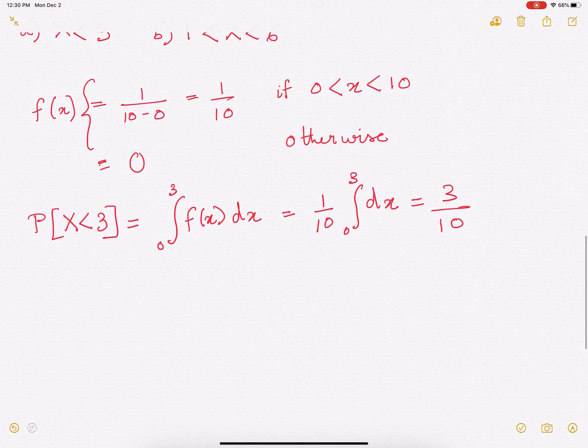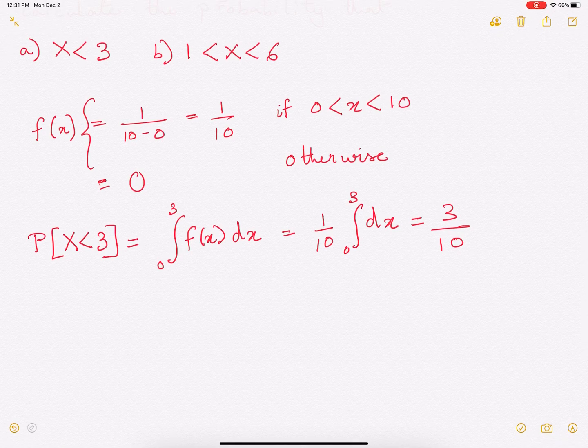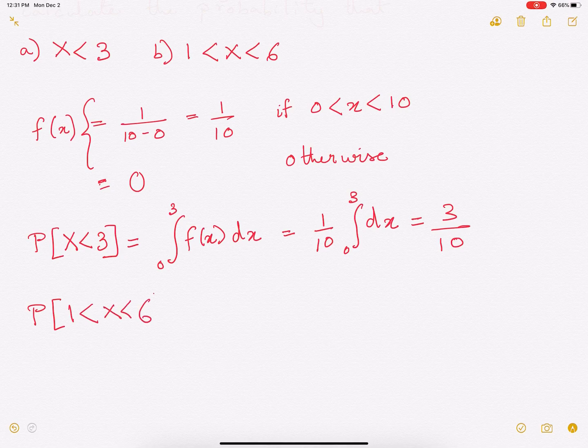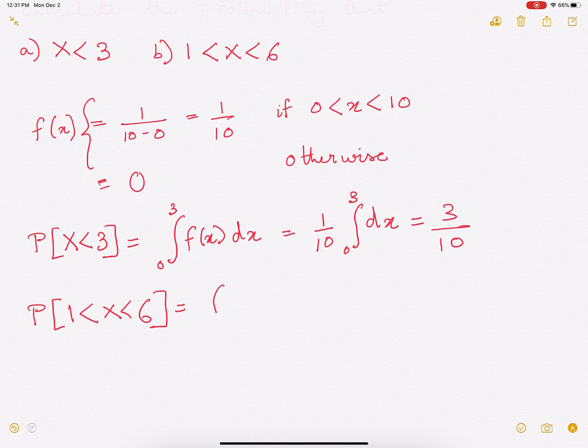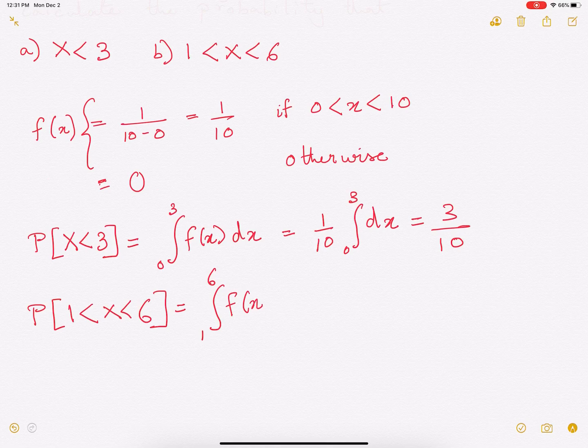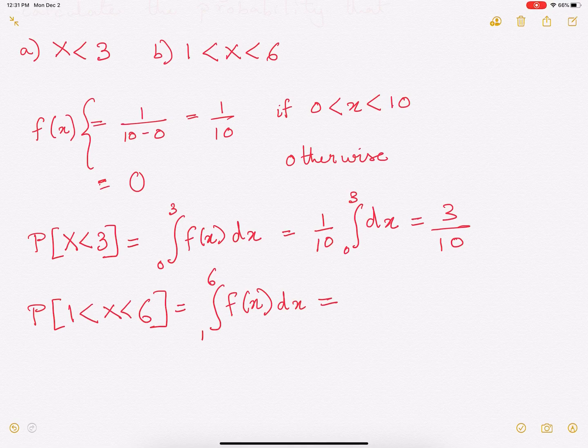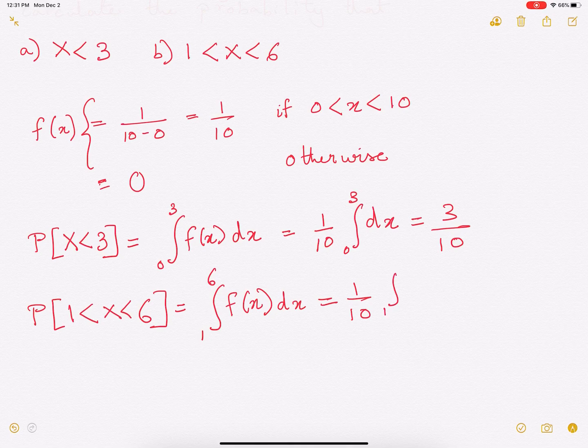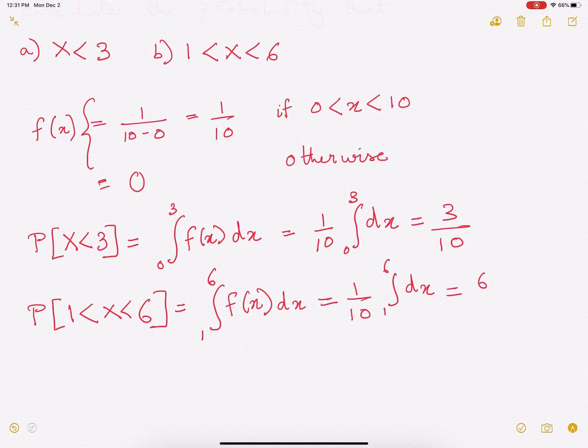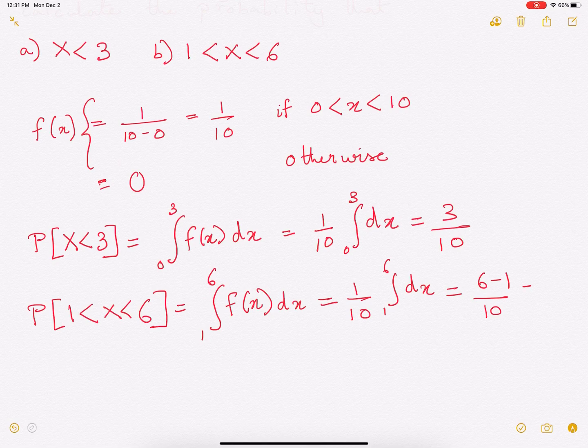Now the second problem is to find the probability of x lying between 1 and 6. Once again, we use the same formula, which is we integrate between 1 and 6, fx dx. fx is 1 over 10 for values of x between 0 and 10, so it's going to be 1 over 10, which has come out of this integration, and we are going to integrate between 1 and 6 dx, which is essentially 6 minus 1 over 10, 5 over 10, which is half.